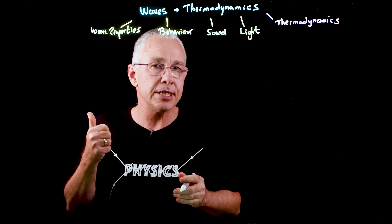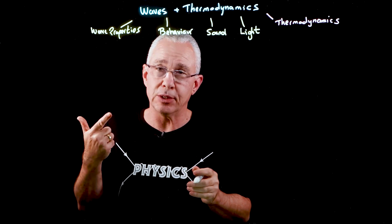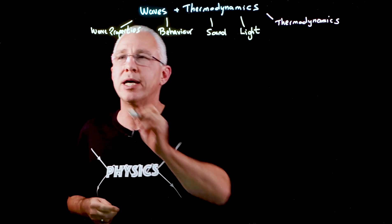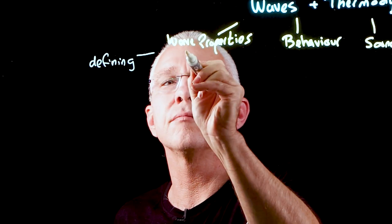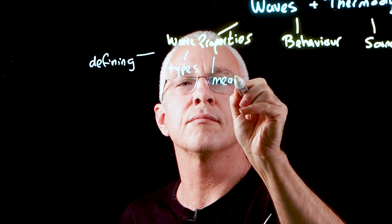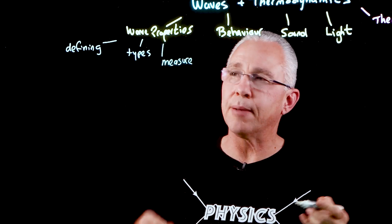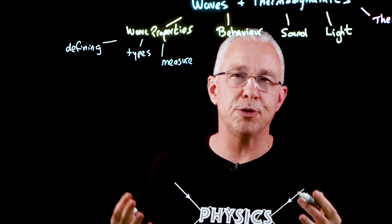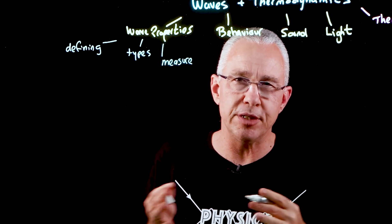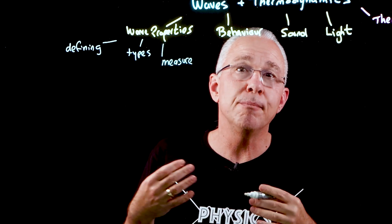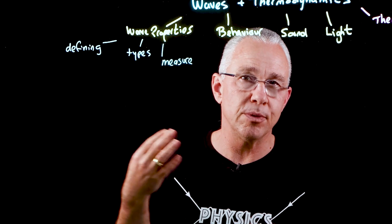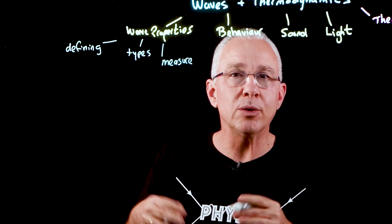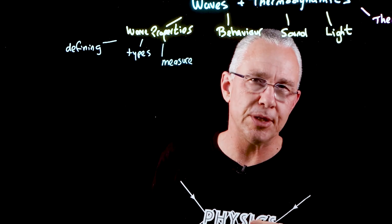When we look at wave properties, we're dealing with three key areas: first, defining waves; secondly, looking at examples of waves; and finally, how we measure waves. When defining waves, a wave is simply a traveling disturbance — it moves energy from one place to another by some form of vibration.